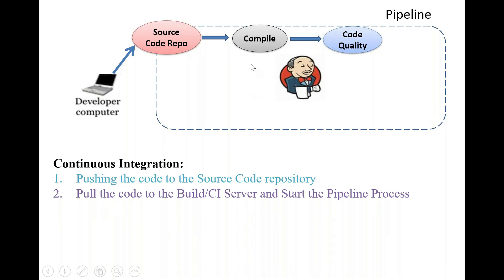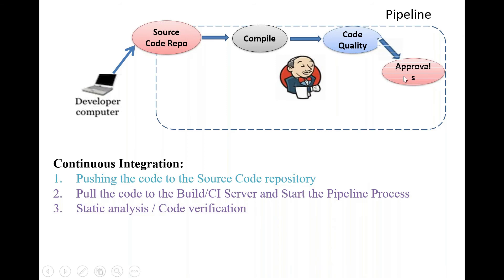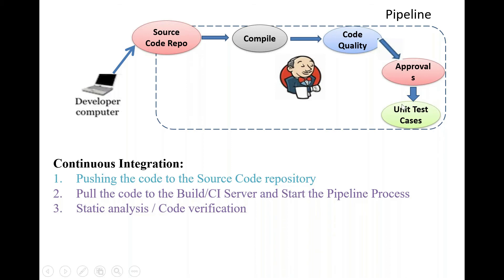If compilation fails, it stops and returns — indicating which programs failed. If successful, it promotes to the next stage: code quality evaluation. If that phase is successful with all thousand files passing, it promotes to the next level — the approval stage. Once approved, we run all test cases planned from the developer's point of view: pre-deployment test cases — running test cases before deploying to the server.